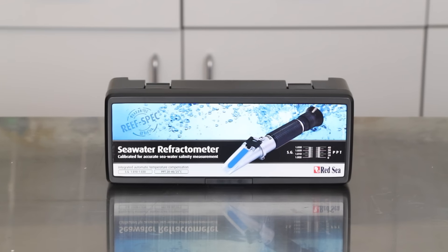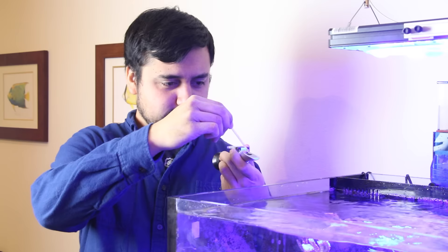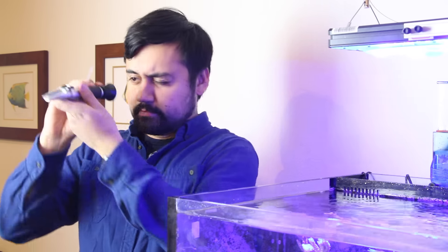First up we have the Red Sea Refractometer which is 15% off until the new year. Now this is my favorite refractometer because it is calibrated to natural sea water, which means it will give you accurate salinity readings for the water in your reef tank.